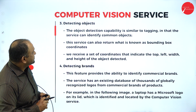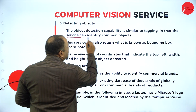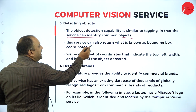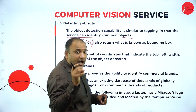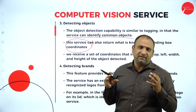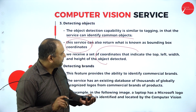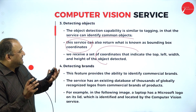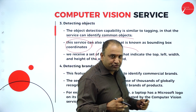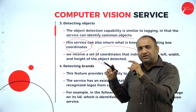The computer vision's detecting of objects is similar to tagging, but the only difference is that you're going to identify certain common objects. This service can also return what is known as bounding box coordinates. A bounding box coordinate gives certain values and plots where it specifies the coordinates and values. We are going to receive a set of coordinates that will indicate the top-left, width, height, and the object that has been detected.